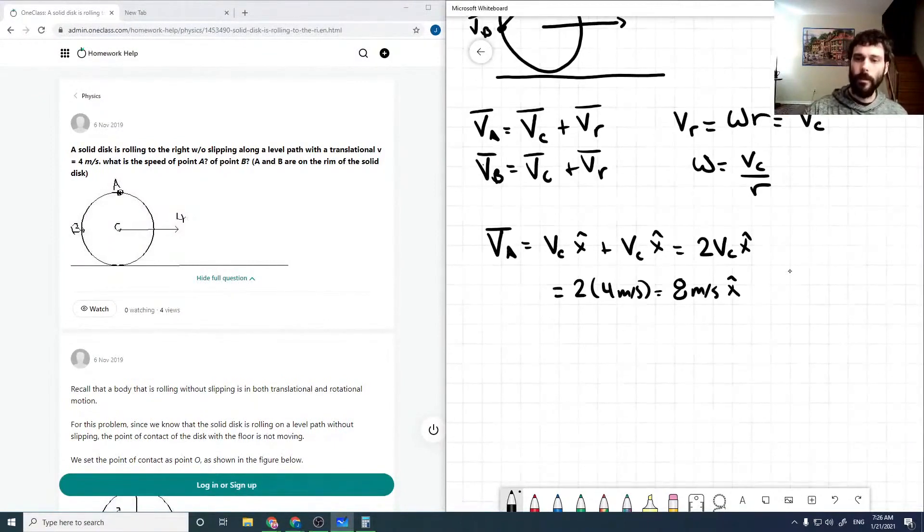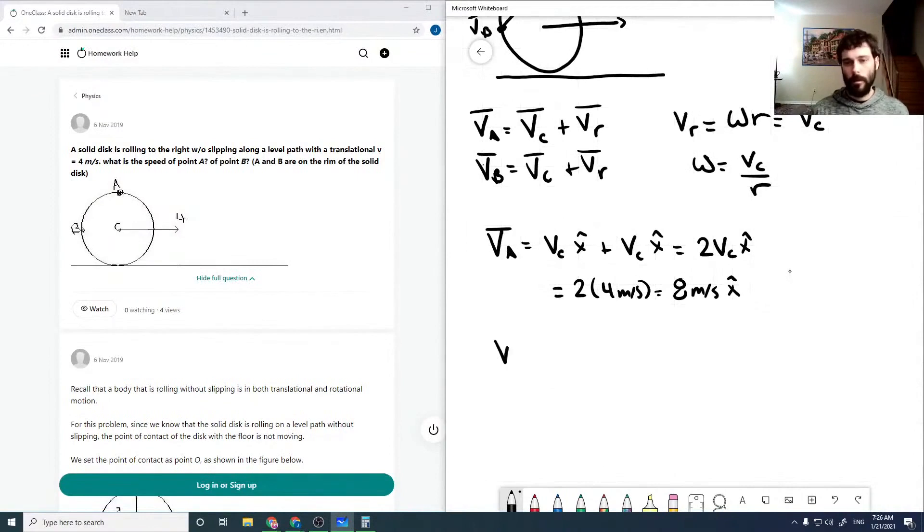Now, at point B, it's going to be our central velocity X hat plus our central velocity in the Y hat direction. So that'll still be 4 meters per second X hat plus 4 meters per second Y hat.